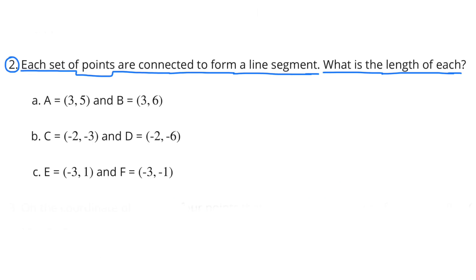Number 2: Each set of points are connected to form a line segment. What is the length of each? Part A: Point A has coordinates 3 and 5, and point B has coordinates 3 and 6. We notice the x-coordinate is the same — both are 3 — but the y-coordinates are different. The difference between 5 and 6 is 1, so the line segment is one unit in length.